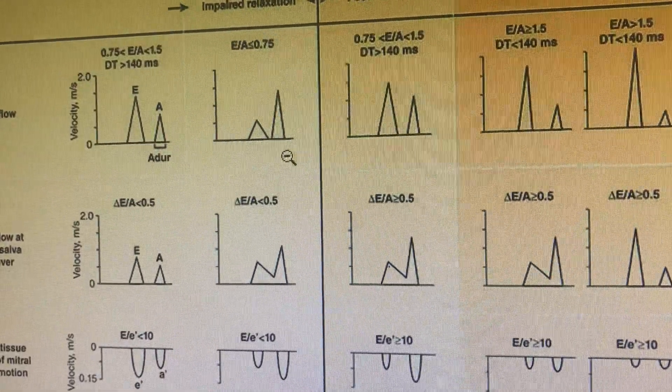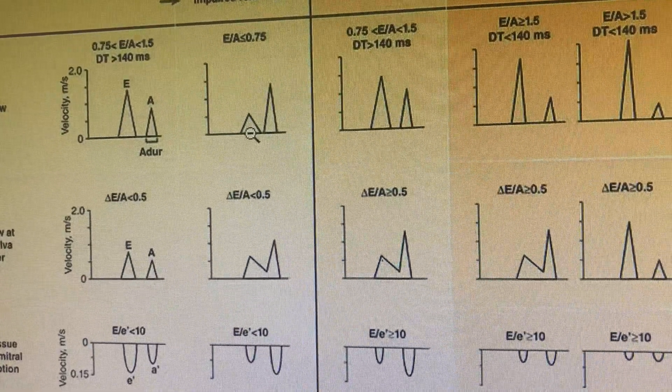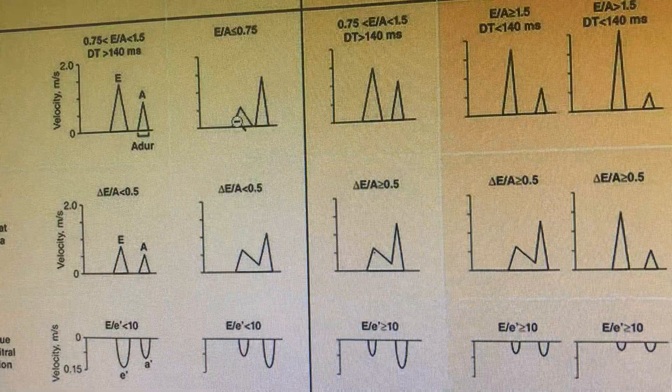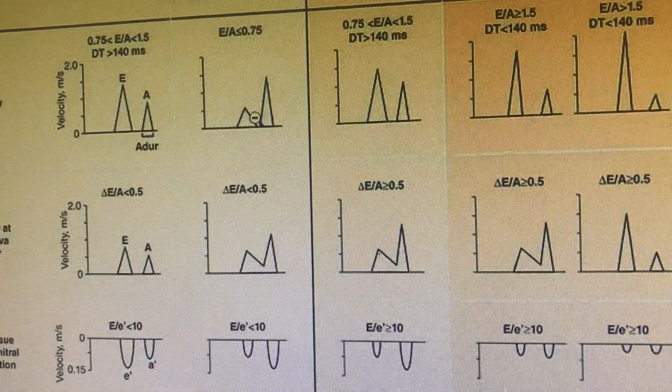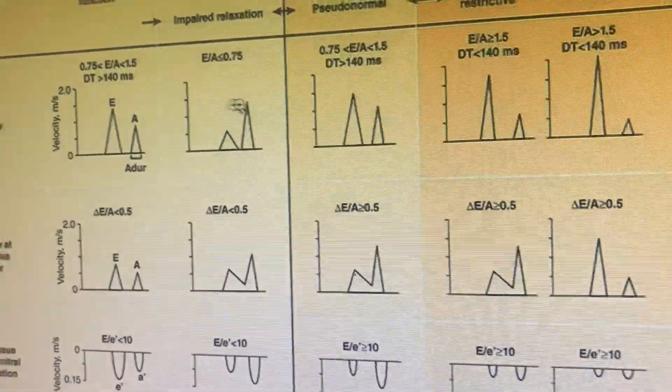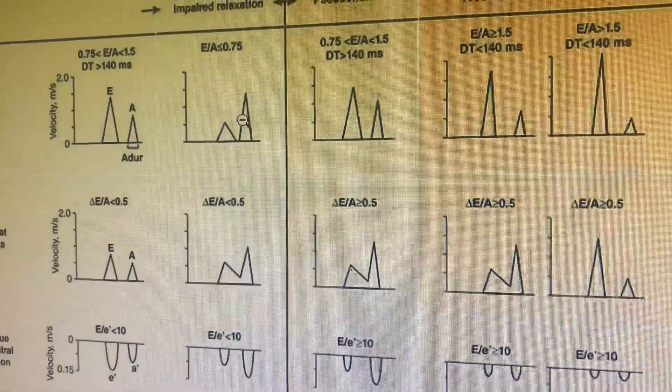Early filling is not happening as much because there is impaired relaxation. The volume of blood which can be filled inside the ventricle during early filling will be less, so the atrium would have to do more work. That is why the E/A ratio becomes less than 0.75. This is impaired relaxation, impacting Grade 1.